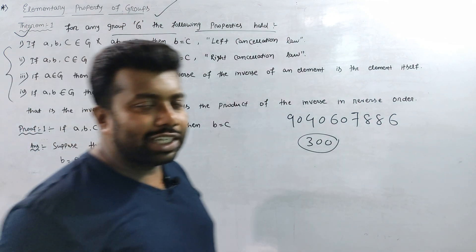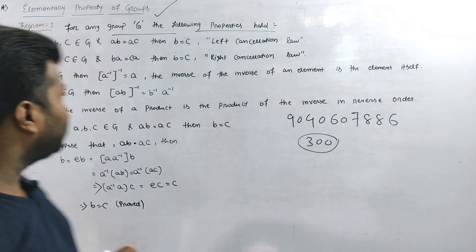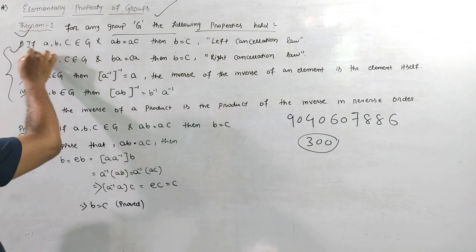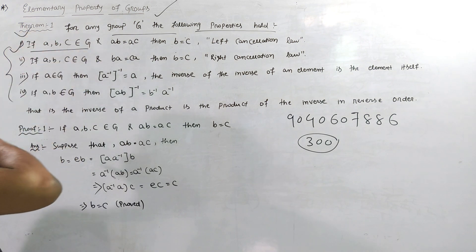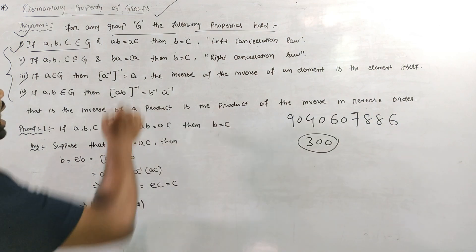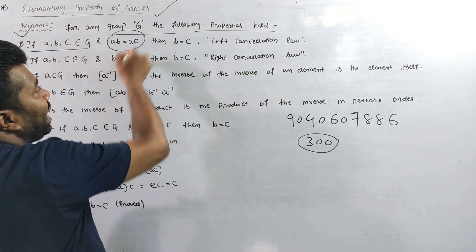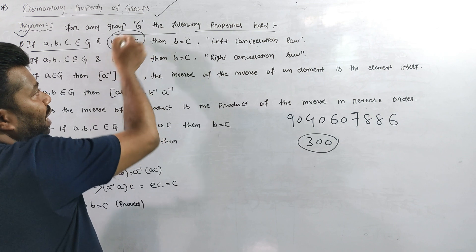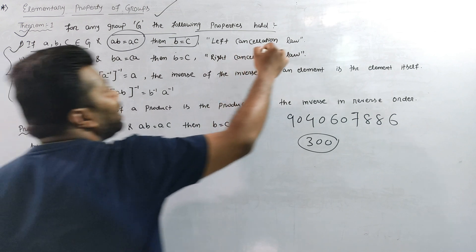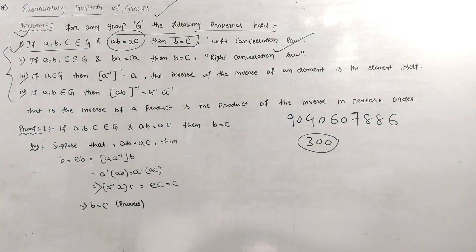What are the Charter Properties of Group? First, if A, B, C belong to G, and A·B = A·C, then by the left cancellation law, B is equal to C.